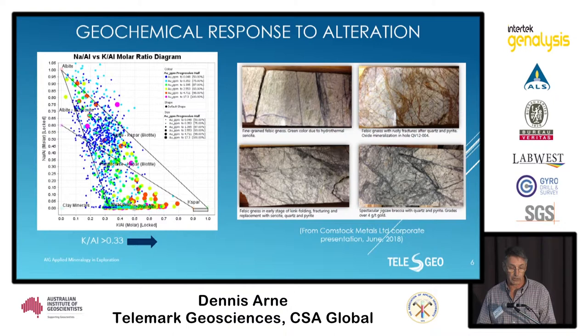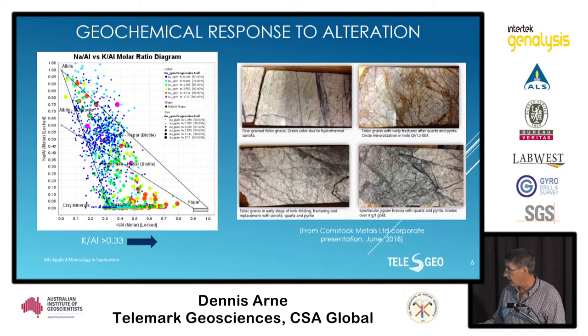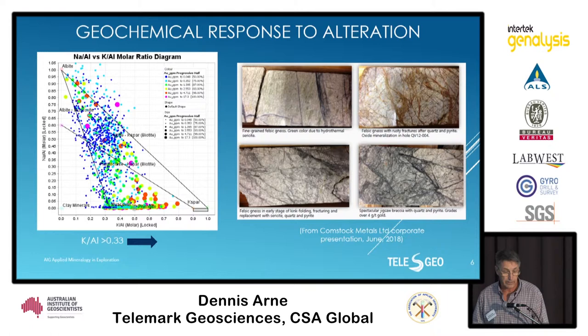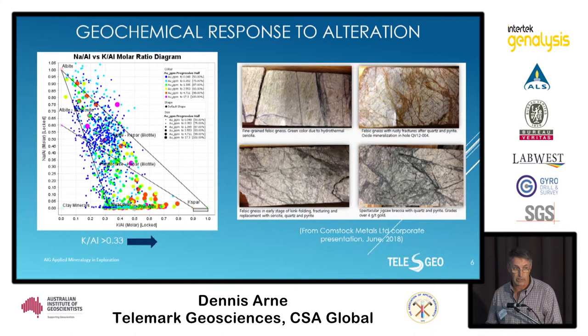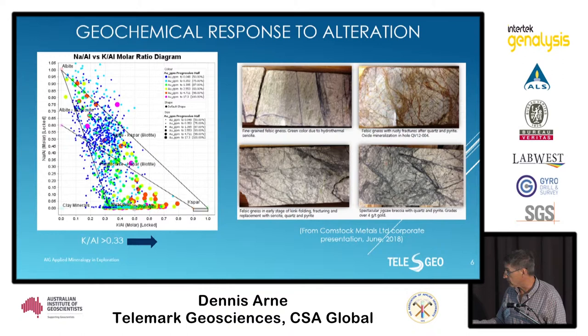One of the things you can see if you plot the geochemistry — this is four-acid geochemistry data supplied by Comstock Metals — is a molar ratio plot of sodium against potassium, with sodium on the y-axis and potassium on the x-axis. We can see a good spread in data showing wall rock alteration. Some samples are moving up towards the albite node, so we have some albitization happening, but the majority of mineralized samples are losing all their sodium — feldspar-destructive alteration. The color and size relate to the gold content of those one-meter intervals.